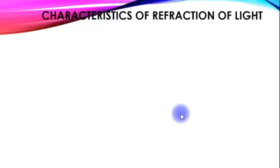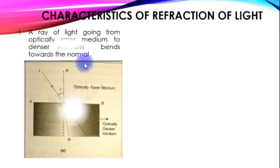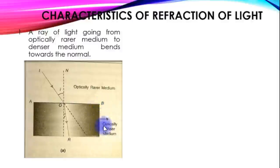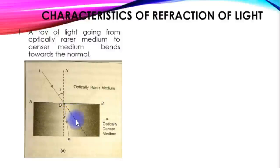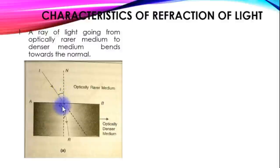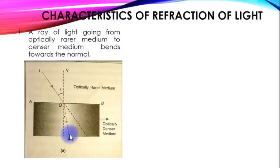The first characteristic of refraction of light: a ray of light going from an optically rarer medium to an optically denser medium bends toward the normal. If the ray strikes the denser medium from a rarer medium, it bends toward the normal.